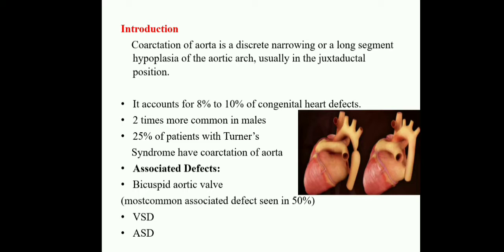Coming to the associated defects: when a baby has coarctation of aorta, they won't have only one defect; they are associated with other defects. For example, bicuspid aortic valve defect is also there, and then VSD and ASD conditions — ventricular septal defects and atrial septal defects. These two conditions are associated defects, mostly seen in 50% of cases.